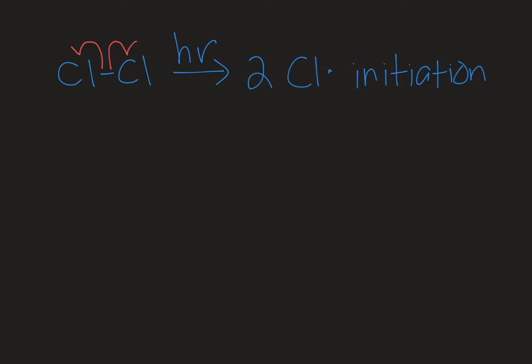Now we have radical intermediates, and they can react with our molecule of interest. So we have this alkene here, and we're going to react that with one of those chlorine radicals, and it's going to pull a proton off of the allylic position. So the position next door to the double bond.